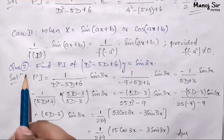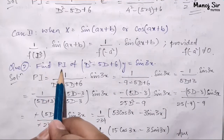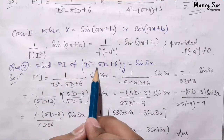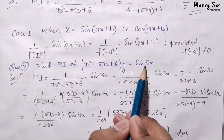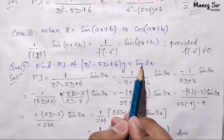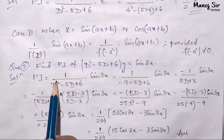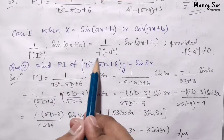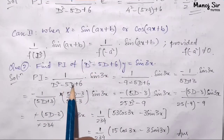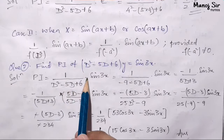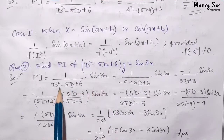Let us understand case number two with a problem. Question number two says: find the PI of D squared minus 5D plus 6 times y equals to sine 3x. So here PI equals to 1 upon D squared minus 5D plus 6, into sine of 3x.